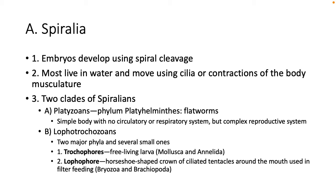Remember with our Spiralia — these are the embryos that use spiral cleavage. When they're in that eight-cell stage, going from four to eight, the cells are askew, off at an angle, not on top of each other. As a result, you end up with spiral cleavage. Most Spiralia do live in the water and have cilia or some type of contraction for movement.